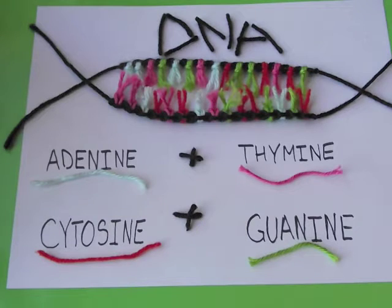DNA, deoxyribonucleic acid, is contained within the nucleus and stores genetic code within chromosomes. A molecule of DNA is formed from two DNA strands paired together by hydrogen bonding between complementary nitrogenous bases. These bases are adenine, thymine, cytosine, and guanine.